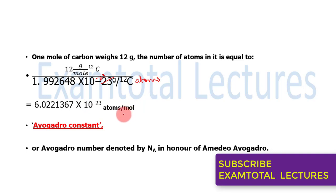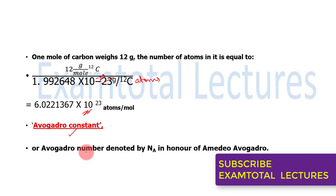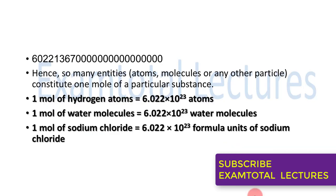From this calculation, the number of entities in one mole equals 6.0221367 × 10²³ per mole. This number of entities in one mole is very important and has a separate name and symbol. It is known as Avogadro's constant, also called Avogadro's number, denoted as Nₐ, in honor of Amedeo Avogadro.